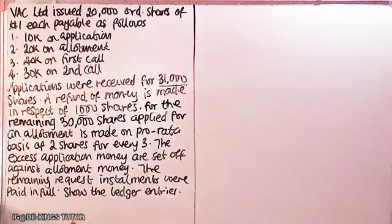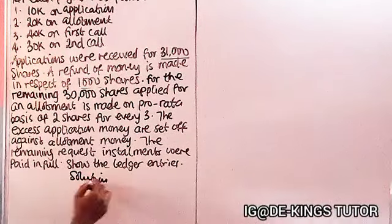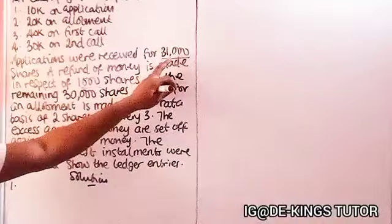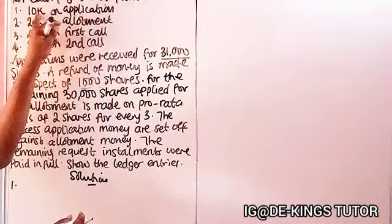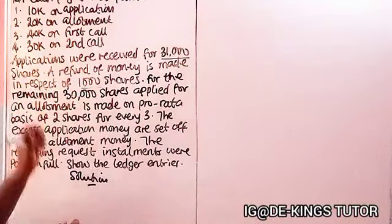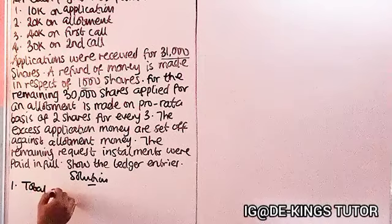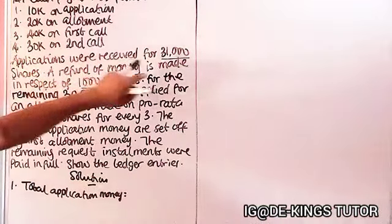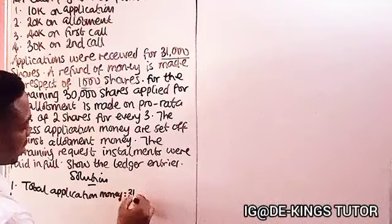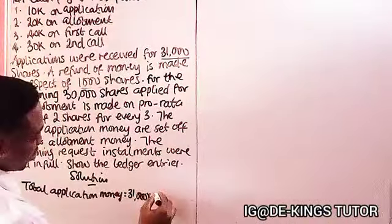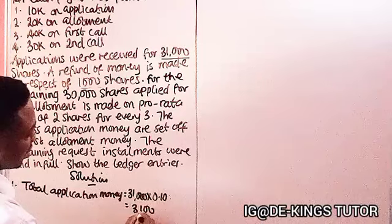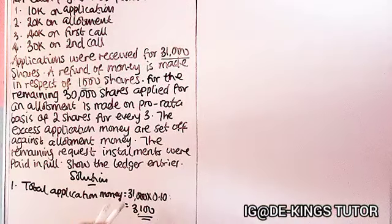Before we show the ledger entry, there is a brief working we need to do — like an adjustment, very important. First, let's calculate the total application money received: 31,000 shares times 10 kobo (0.10) equals 3,100. So three thousand one hundred is the total application money.